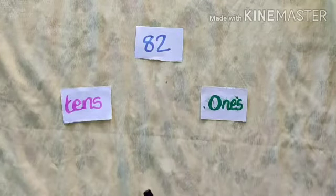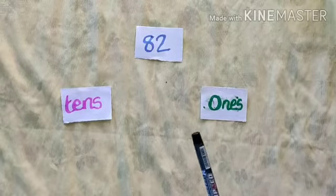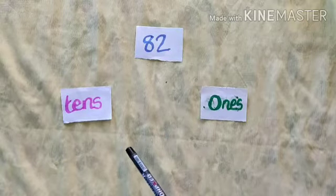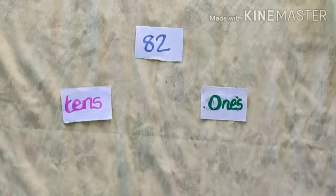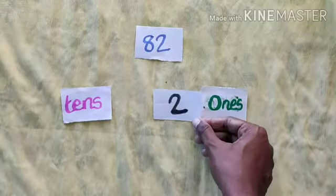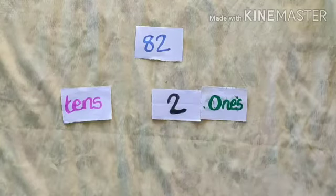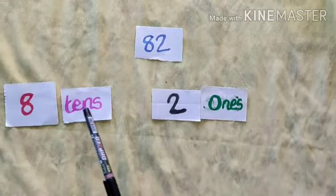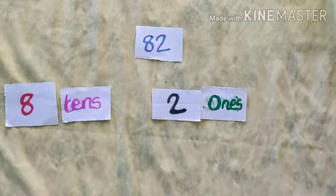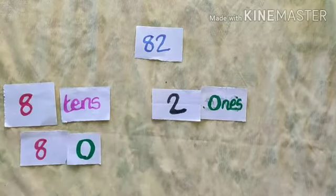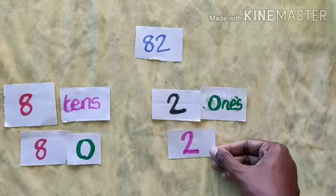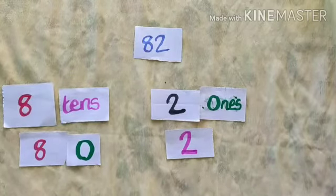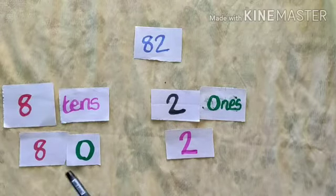Next, read this number — number 82. Now we can find the place value of each digit. What is the number in 1's place? 2. How many 1's? 2 ones. And how many 10's? 8 tens. 8 tens means 80, and 2 ones is 2. So place value of 8 is 80 and place value of 2 is 2.